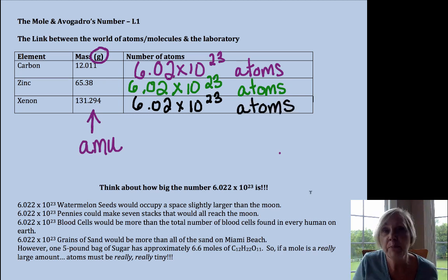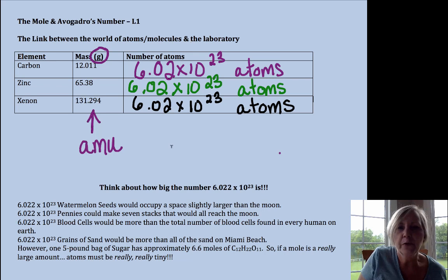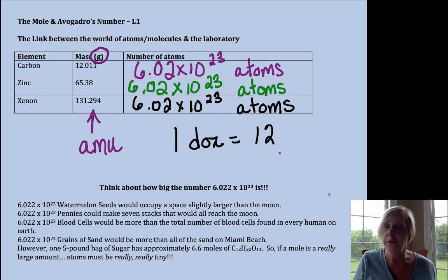Now this number is our conversion factor. You can really think of it as that, and it's much like a dozen. If we have one dozen, we have 12.